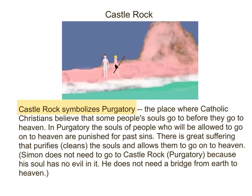Castle Rock symbolizes purgatory — the place where Catholic Christians believe that some people's souls go before they go to heaven. In purgatory, the souls of people who will eventually go to heaven are punished for past sins; great suffering purifies and cleanses their souls. Simon does not need to go to Castle Rock — purgatory — because his soul has no evil in it. He does not need a bridge from earth to heaven.